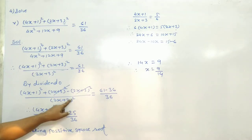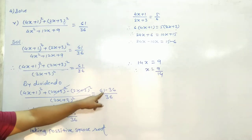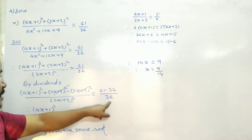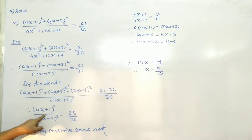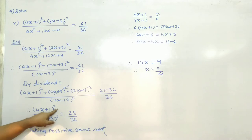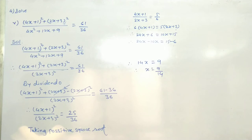(4x+1)² + (2x+3)² minus (2x+3)² is equal to 61 minus 36 divided by 36. So (4x+1)² upon (2x+3)² is equal to 25 upon 36.